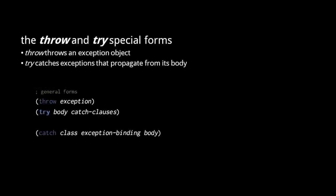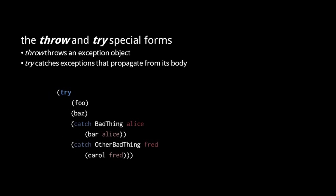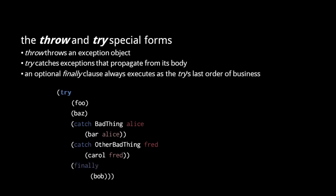The throw special form takes one expression that returns an exception object to throw. The try special form catches exceptions that propagate from its body. Each catch clause of a try specifies a class of exception to catch, a symbol to which to bind the exception object, and a body to execute when that exception is caught. Just like in Java, a try may end with a finally clause after the catch clauses — even if an exception propagates out of the try, the finally clause body will always execute as the try's last order of business.